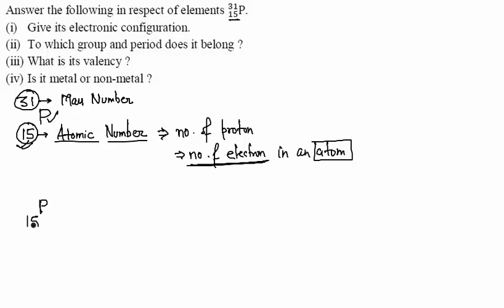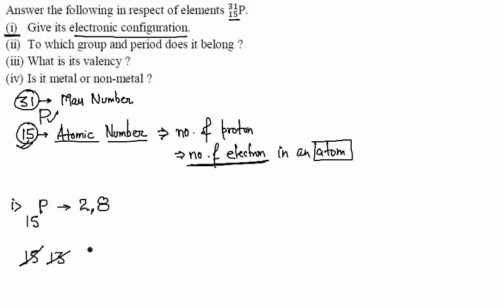The first part asks for the electronic configuration of phosphorus. We have 15 electrons. In the first shell, we put a maximum of 2 electrons. We are left with 13. In the second shell, we put a maximum of 8 electrons, leaving 5. In the third shell, we can put up to 18, so we place the remaining 5. The electronic configuration is 2, 8, 5.